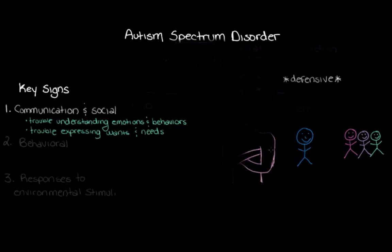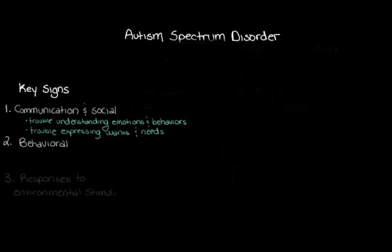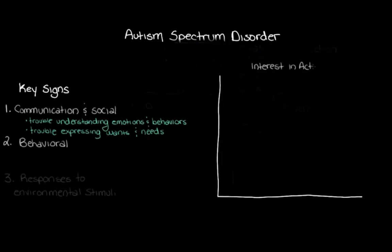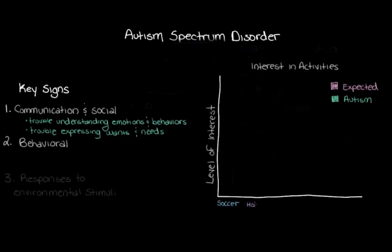Moving to our next category: behavioral signs of autism spectrum disorder. Let's make a graph showing different levels of interest in activities. Our y-axis will be level of interest. We'll use pink to draw what we might expect for a typical kid, and green for what we might see for a kid with autism spectrum disorder. On our x-axis we'll put activities like soccer, horseback riding, cars, and playing with blocks.